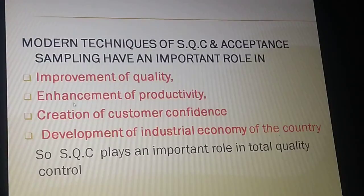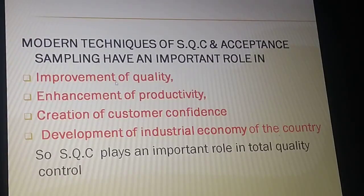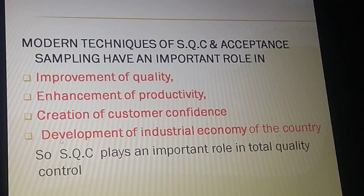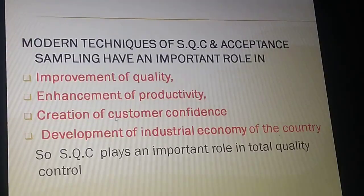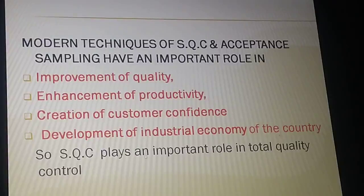Modern techniques of statistical quality control and acceptance sampling play an important role in four areas: first, improvement of quality; second, enhancement of productivity; third, creation of customer confidence; and fourth, development of the industrial economy of the country. When the quality of products is improved, it enhances the productivity of the company and builds customer confidence, which in turn develops the industrial economy of the country.